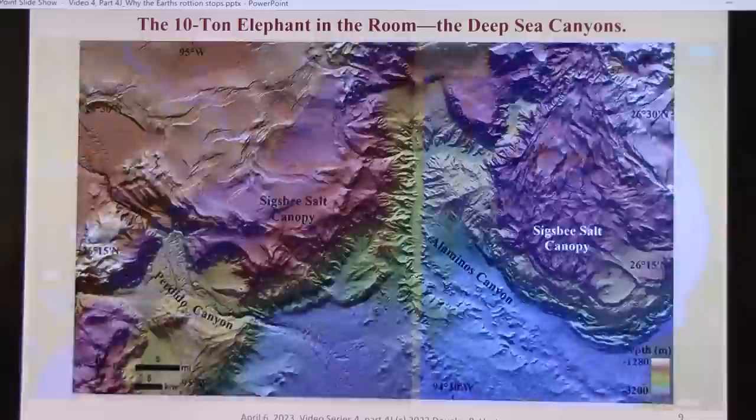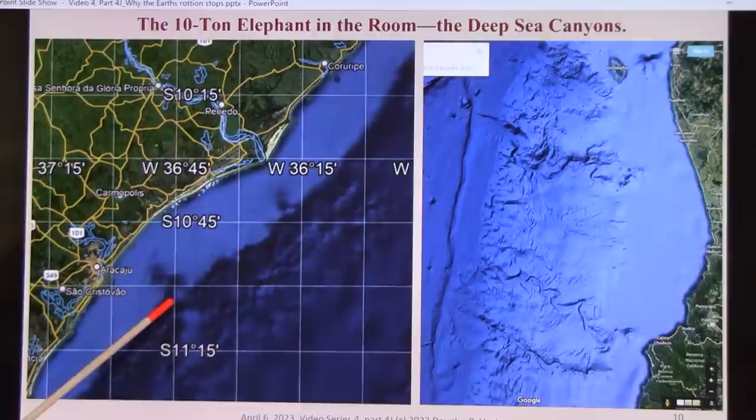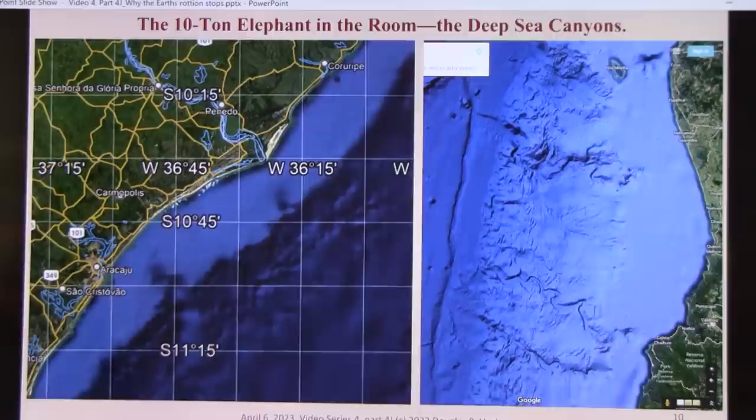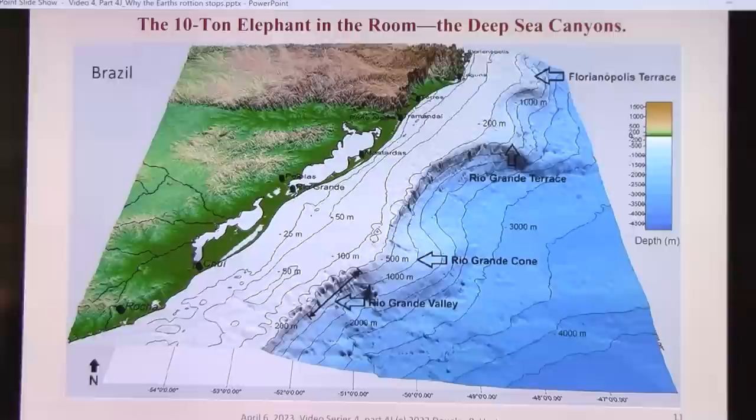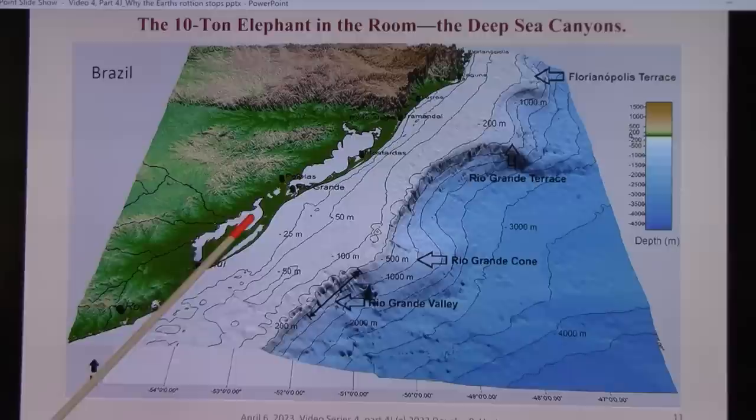This is the Gulf of Mexico. Same thing. This is off the coast of Chile. This is off the coast of Brazil. These are canyons here. They didn't do such a great job of mapping off the coast of Brazil. I guess their geological society doesn't have the funds to really do as good a job as we have. Again, off the coast of Brazil. And all these are canyons.